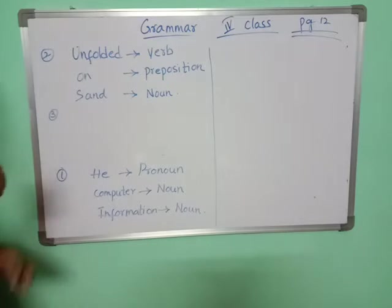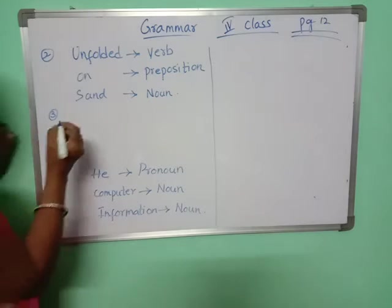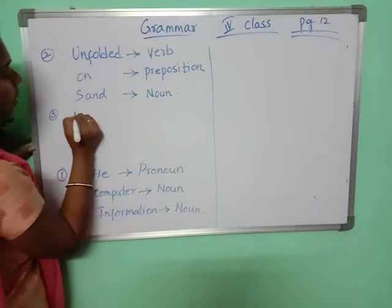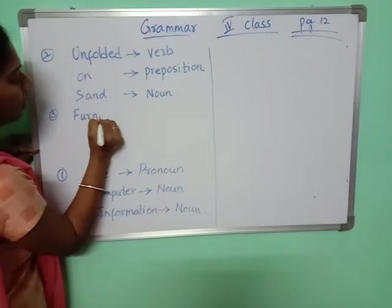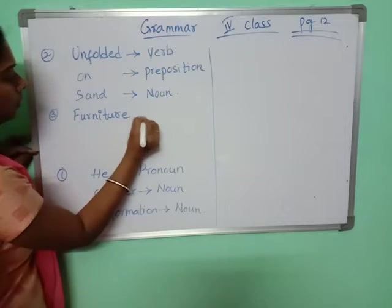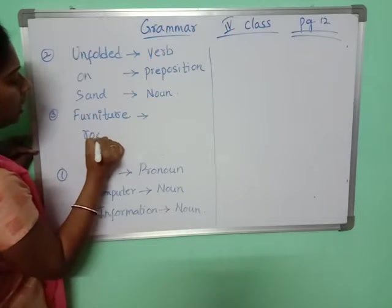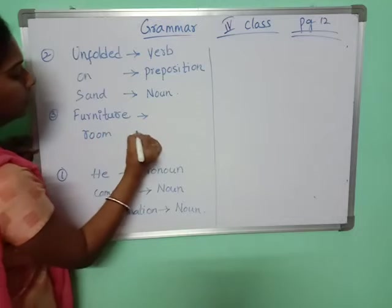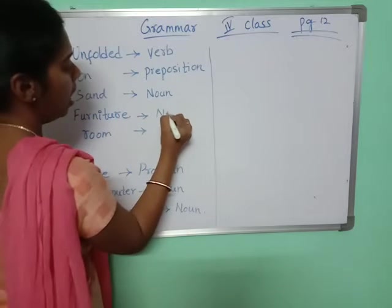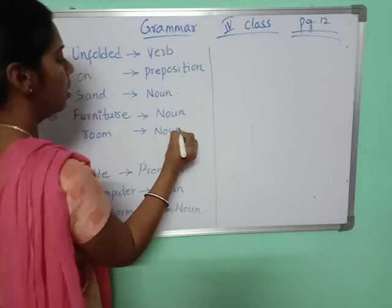Third one: There are too much furniture in the room. 'Furniture' is underlined and 'room' is underlined. So 'furniture' is a noun and 'room' is also a noun.